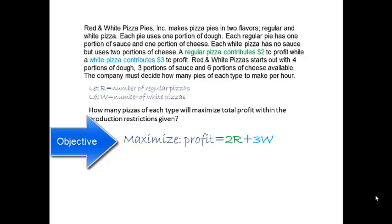Since profit per regular pizza is $2, the profit from R regular pizzas is 2R. Similarly, the profit from W white pizzas is 3W. And the total profit is the combination, 2R plus 3W. To solve for the best number of regular and white pizzas, we want to find values of R and W that maximize profit.